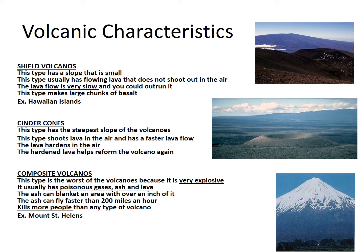Let's look at some of the characteristics. Shield volcanoes have a very small slope. They do not usually have lava that shoots out in the air, and the lava flow is very slow — slow enough that you could outrun it. This type makes large chunks of basalt, and an example is the Hawaiian Islands.